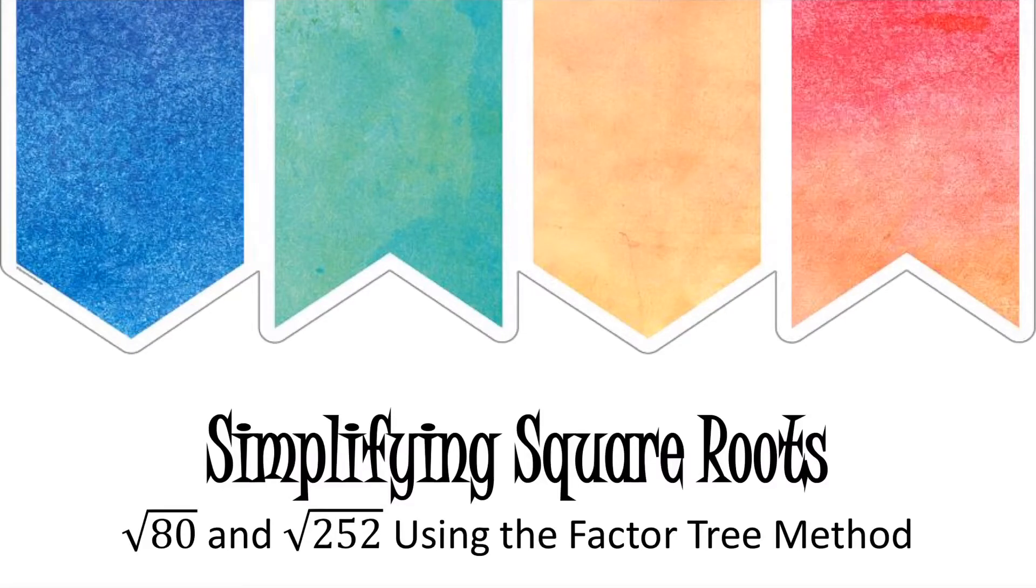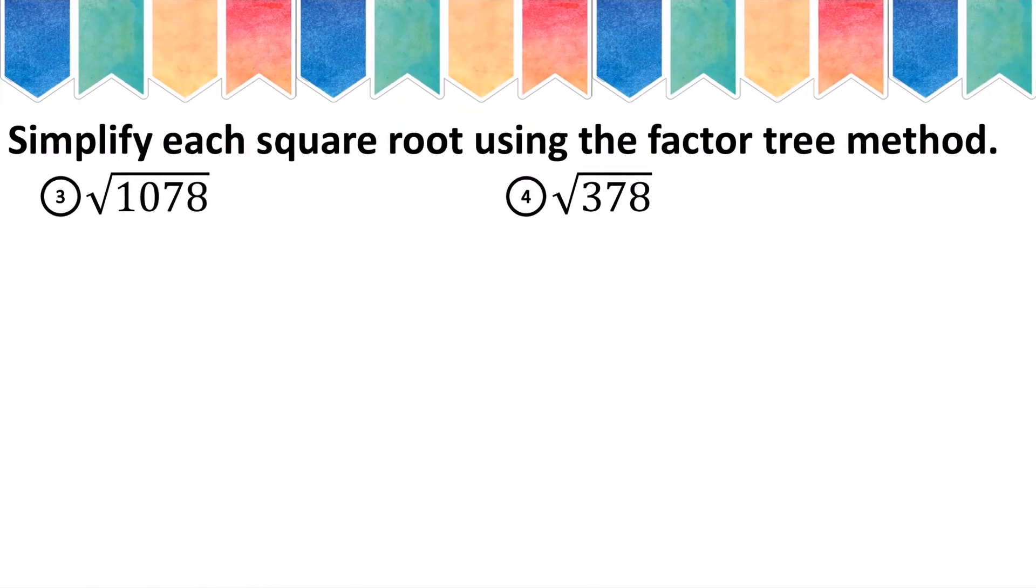In this video, we are learning how to simplify square roots using the factor tree method. Our first example, although it says number 3, this is actually number 1 and this is number 2, is to simplify the square root of 1078.